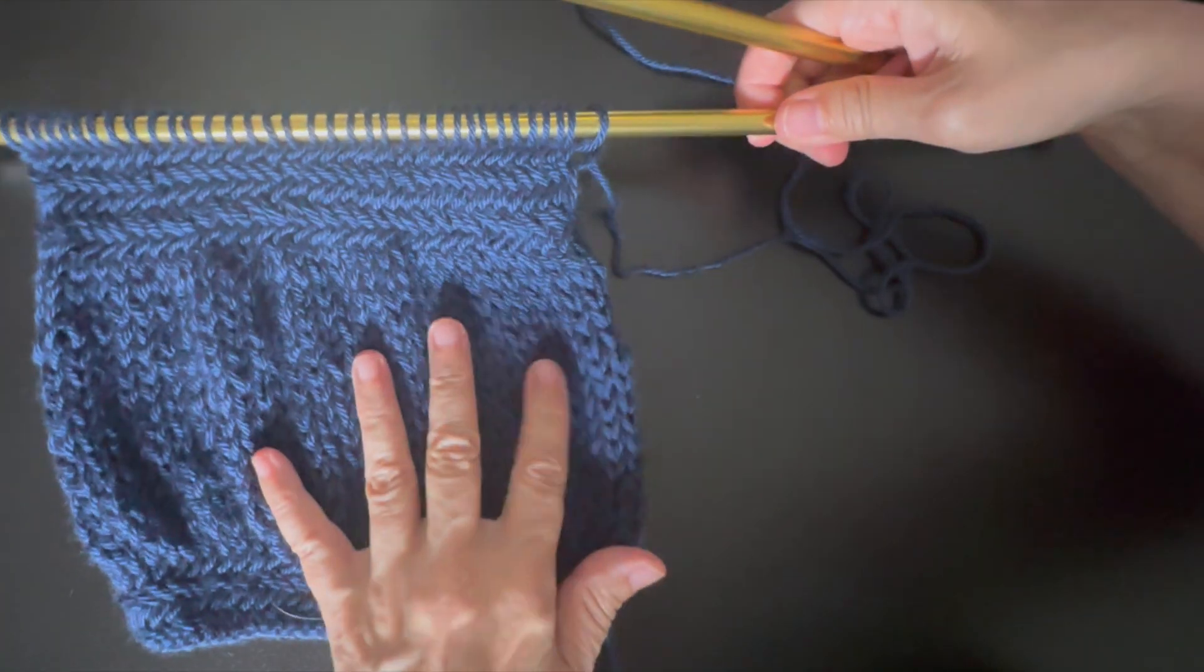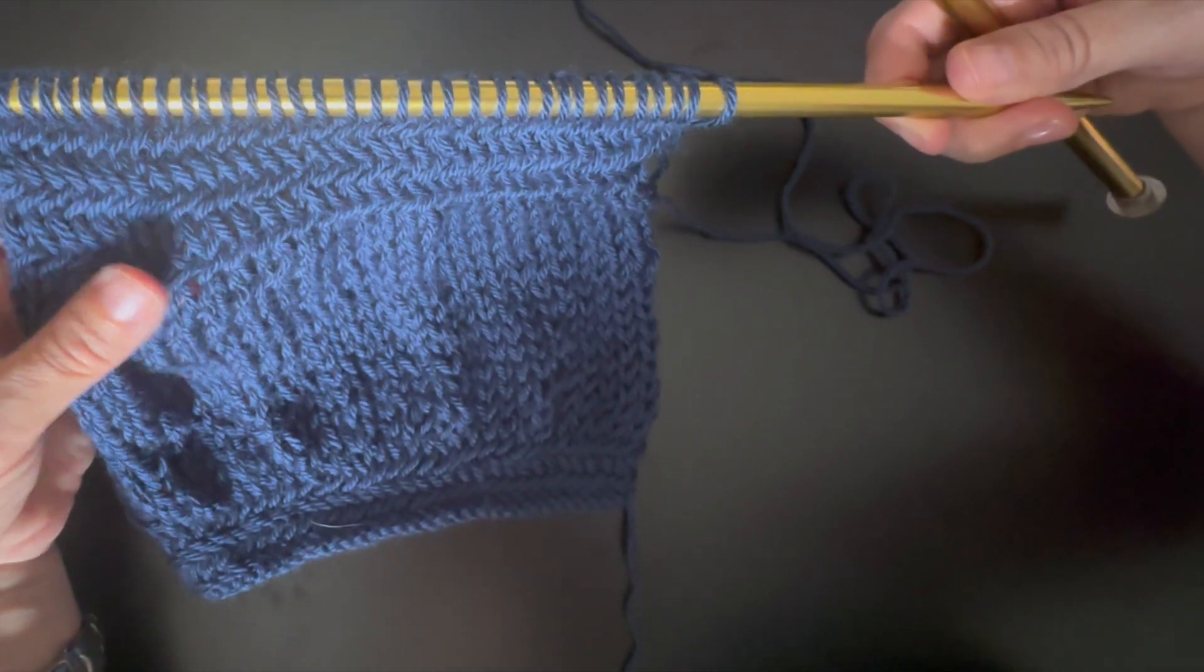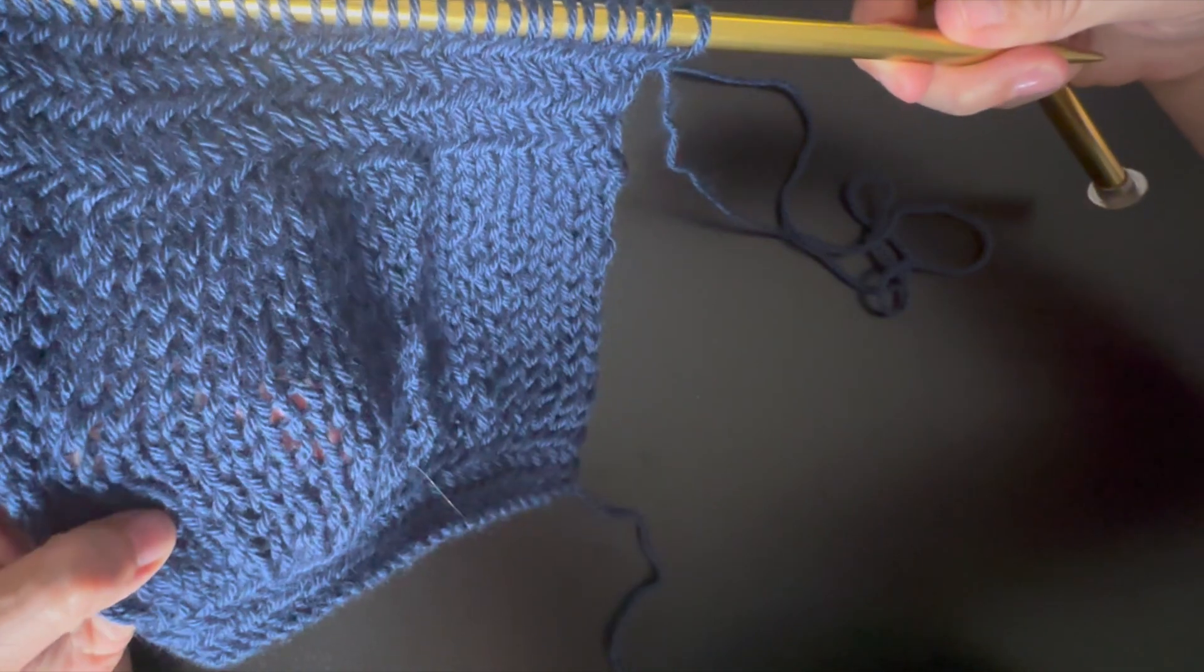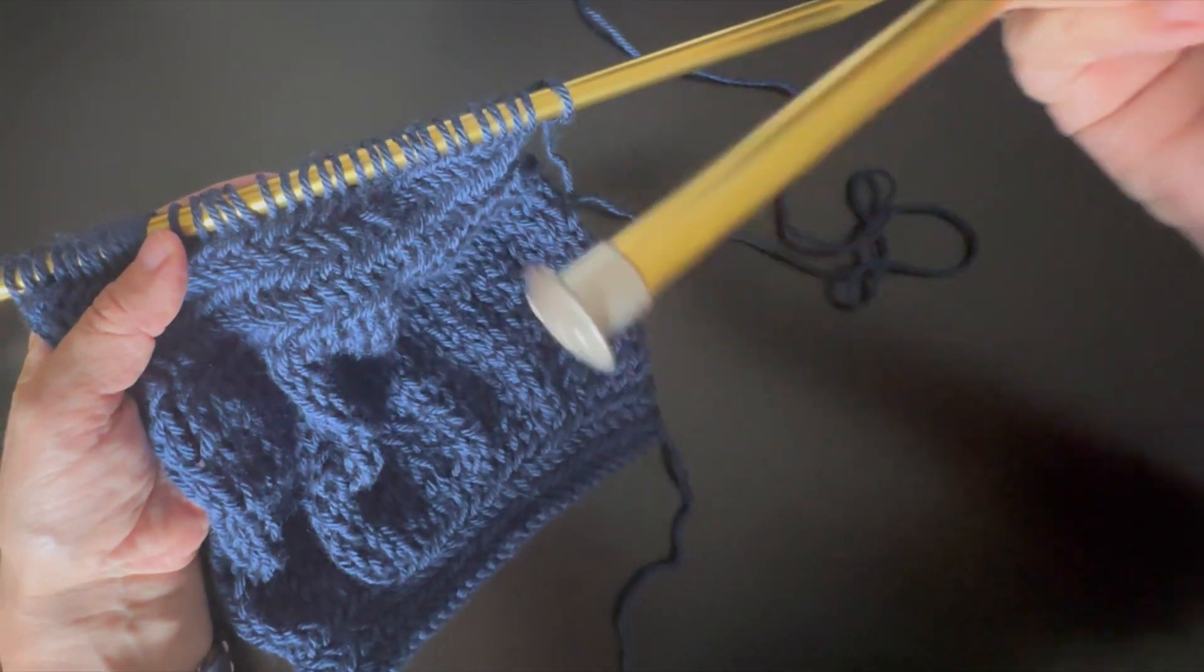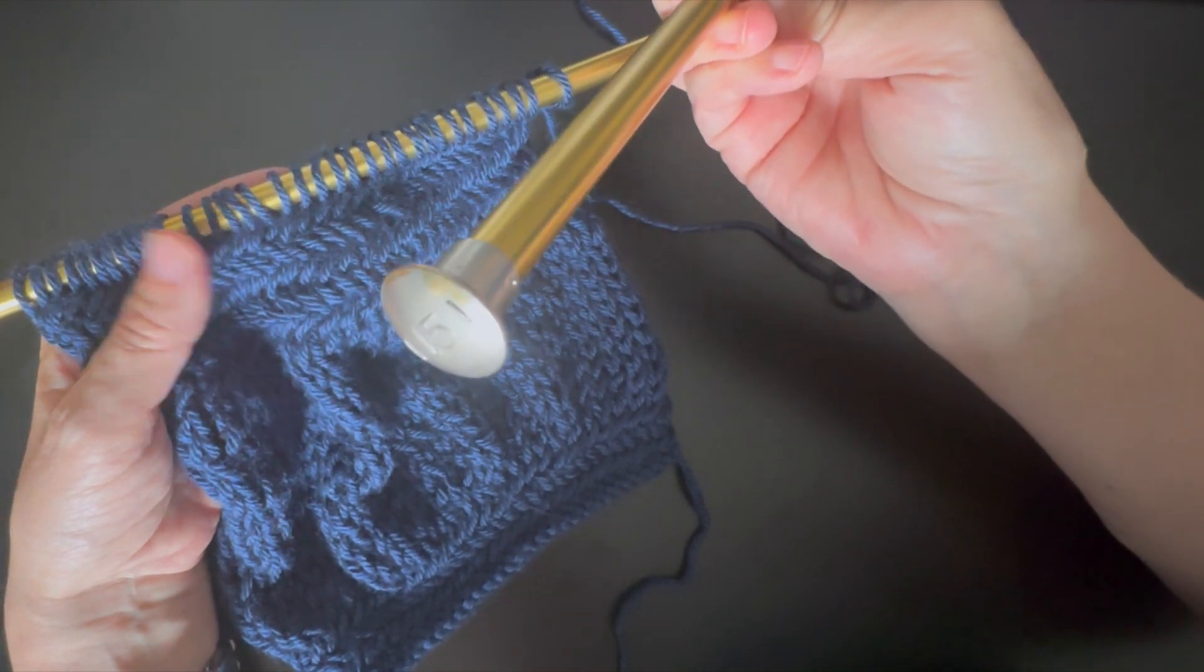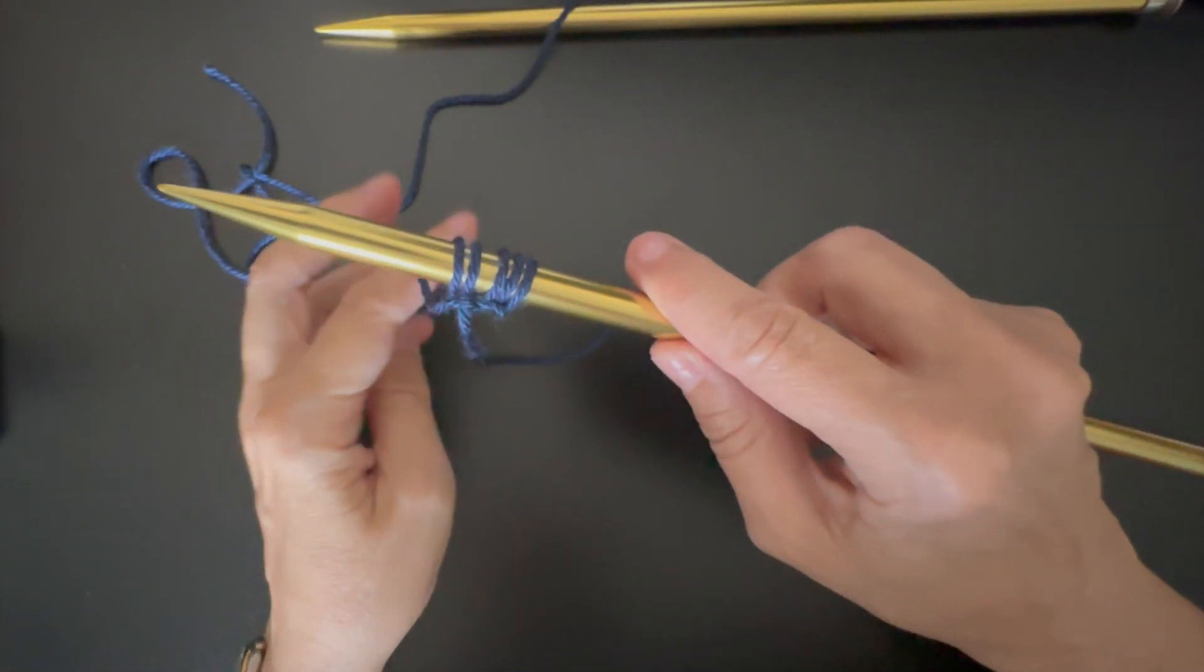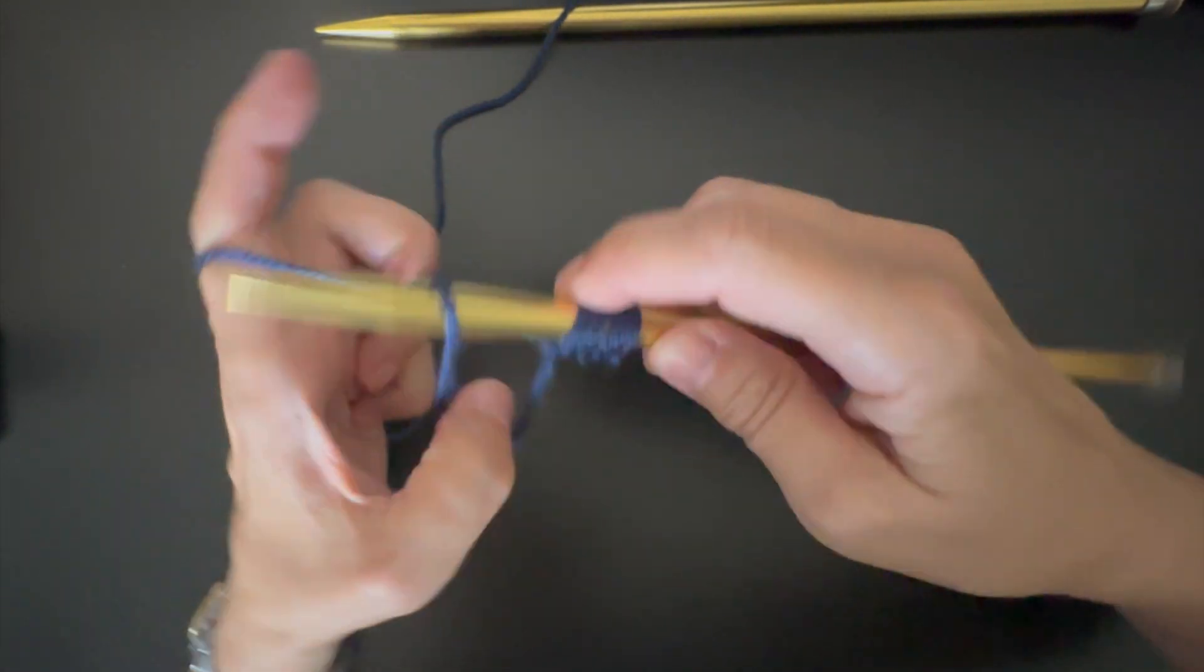Before I begin, let me just tell you that this scarf is composed of two stitches. One is the jersey stitch, which is very plain, and the other one is the spike stitch. That's why I'm using very thick needles, because this stitch is a little bit dense, so a big needle makes it looser. Now we are going to start with 38 points.